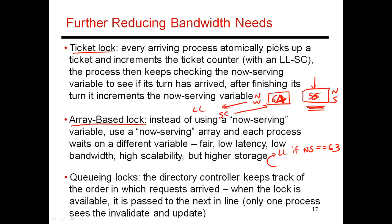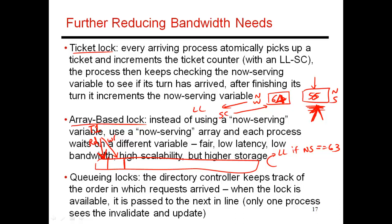Next is an array-based lock, which actually leads to less coherence traffic. Instead of everybody waiting on a single 'now serving' variable, we have an array of 'now serving' variables. When one thread shows up, it is assigned to a specific variable — when you see a zero there, you can proceed with your critical section, and when you're done, you set a zero in the next variable. Thread T1 reads from one location and writes to a different location. Thread T2 is assigned to that next location and keeps reading it; when it becomes zero, T2 proceeds and then writes zero into the next location. Thread T3 is waiting on that next value and updates the following variable, and so on.